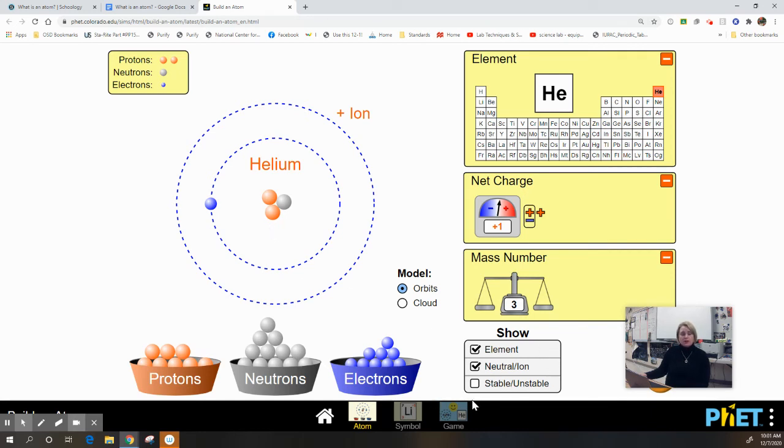I can also tell whether or not this atom or ion will be stable or unstable by adding neutrons. Notice that's still a stable ion. All of a sudden I have too many neutrons there and this particular version of helium, which we'll learn later, is called an isotope, is now unstable.